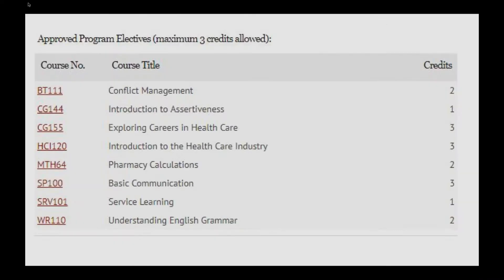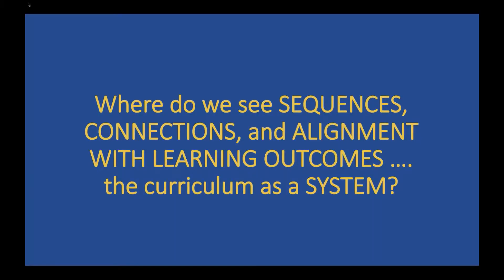These are the three terms of the program — it's a three-term certificate program — again, a list of courses in mostly alphabetical and numerical order. You might not see a lot of connections between the courses seeing that list. The next slide shows the approved electives for this program. Students can take a maximum of three credits. The program is pretty jam-packed, with some one-credit courses, a couple two-credit courses, and several three-credit courses. So where do we see sequences, connections, and alignment with learning outcomes? Where do we see the curriculum as a system?